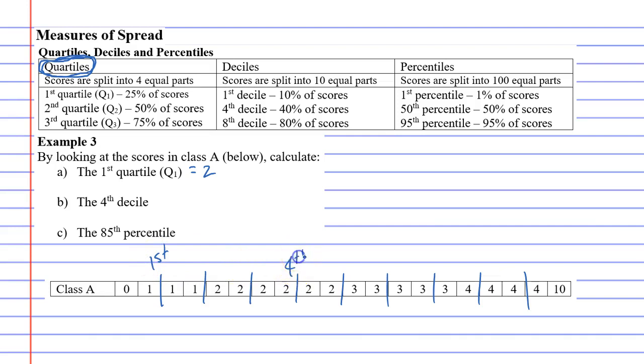second, third, and fourth decile. So when it asks for the fourth decile, I would say that would be two because that's the number that goes between two and two. So that's deciles.